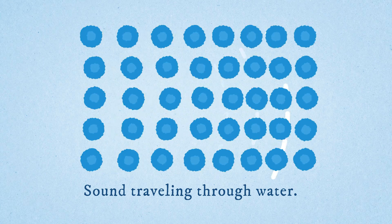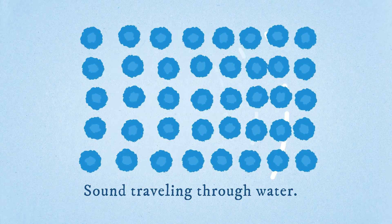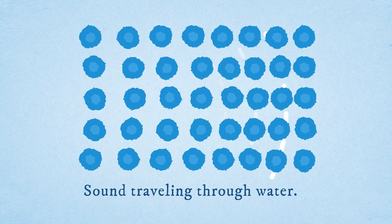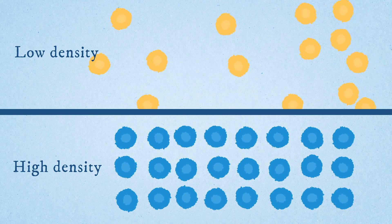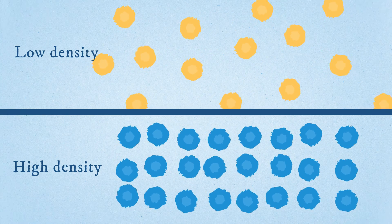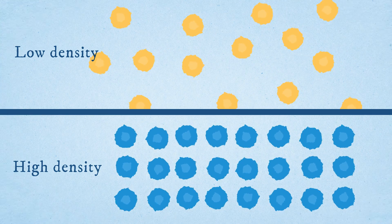Now if you take that into a liquid — say you're in water — those molecules are much more dense, so the compression from one to the other happens a lot faster. You're looking at about four times the speed of sound in water than you would have in air. The density of the air you're going through has a big impact on the speed of sound, on what Mach 1 means.